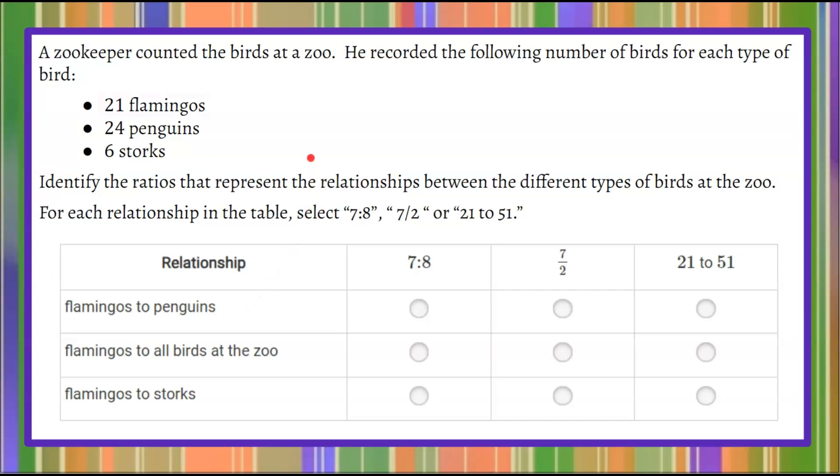Welcome back. So I want to begin by understanding we have 21 flamingos, 24 penguins, and 6 storks. These are the birds that we're talking about at the zoo. All together, if we added these up, 24 plus 6 is 30, plus another 21 gives us 51 birds.